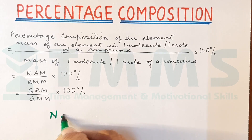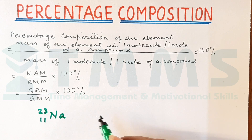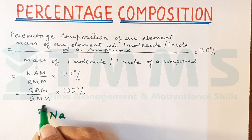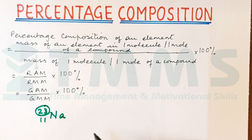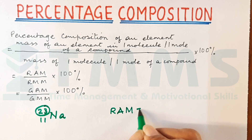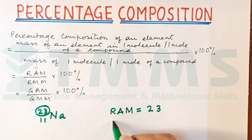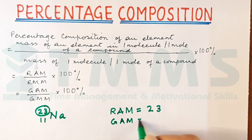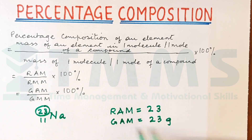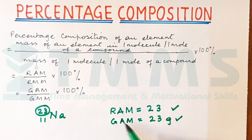Let us take sodium. If you look at the periodic table, sodium is 23/11. This is the atomic mass of sodium, so that becomes the RAM — relative atomic mass — of sodium. If we express this in grams, it becomes gram atomic mass. That is the difference between relative atomic mass and gram atomic mass.